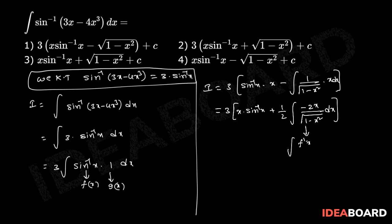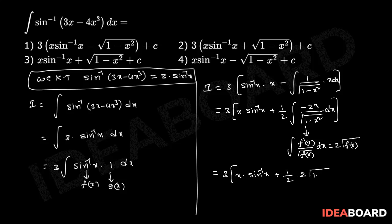Using the formula: integration of f dash of x by square root of f of x dx equals 2 into square root of f of x. So that equals 3 into x into sin inverse of x plus one half times 2 times 2 into square root of (1 minus x square). The 2s cancel, giving 3 into x into sin inverse of x plus square root of (1 minus x square) plus c.